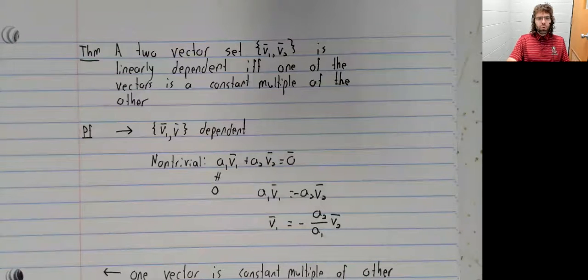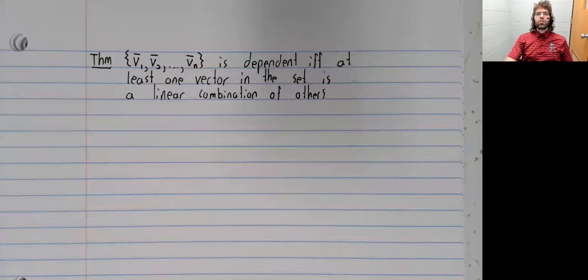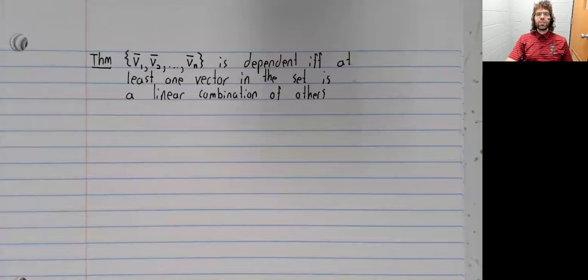What if we have more than two vectors? Theorem: A set of vectors is dependent if and only if at least one vector in the set is a linear combination of the other vectors in the set.